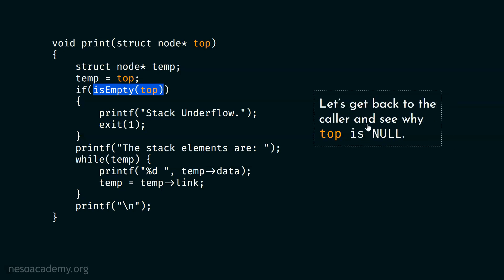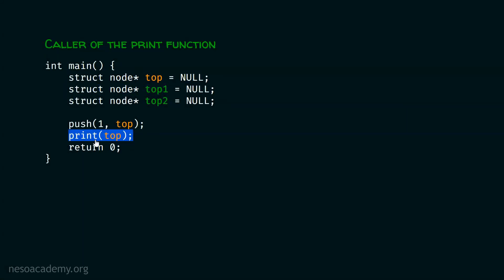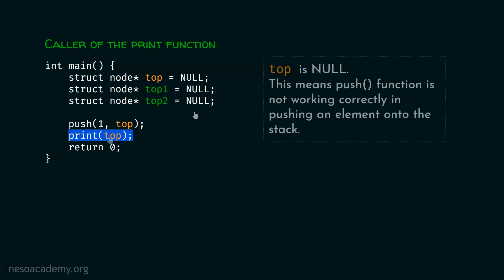Let's get back to the caller and see why top is null. It's time to examine our main function — why we got top equal to null. Obviously, this print function is receiving null, meaning top is null.